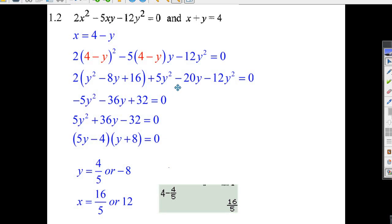We got minus 16y here, minus 20y here. That's minus 36y when we put it together. The only numbers are 2 times 16 is 32.